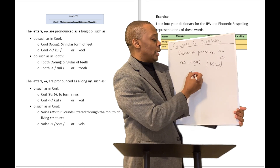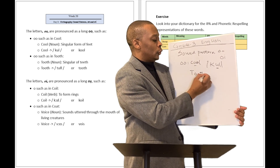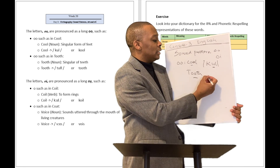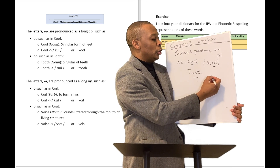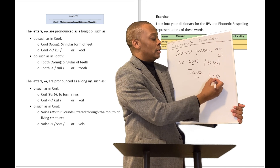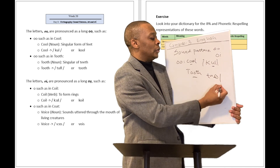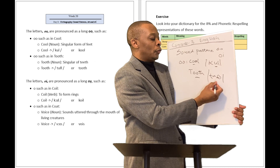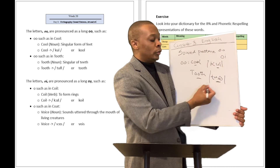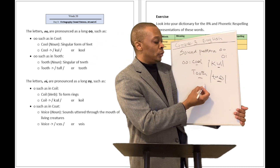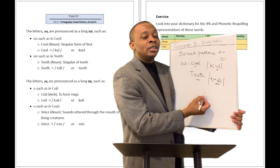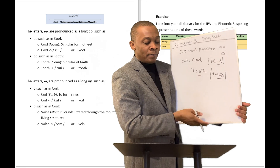What about another word like 'tooth'? When you have two O's put together like that, it's going to be like the U sound. I think the IPA form of it is going to look like that — 'tooth.' So when you see OO, just know that's going to be OO. Can you say that with me? OO.